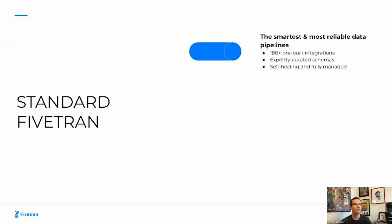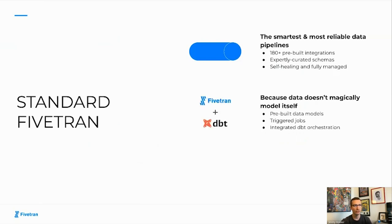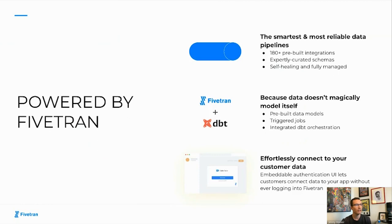Standard Fivetran: the smartest and most reliable data pipelines in the industry. We have 180-plus pre-built integrations, expertly curated schemas so that data lands in a normalized, sane way. It's self-healing and fully managed, which means we handle things like schema drift and API changes — we're on it. For transformations, because data doesn't magically model itself, we have pre-built data models, we make it easy to trigger jobs, and we have integrated dbt orchestration within Fivetran itself. With Powered by Fivetran, we allow you to effortlessly take advantage of these pipelines and build them into your application with embeddable authentication, making it easy for your end users to add their credentials and start syncing data to destinations that you control.